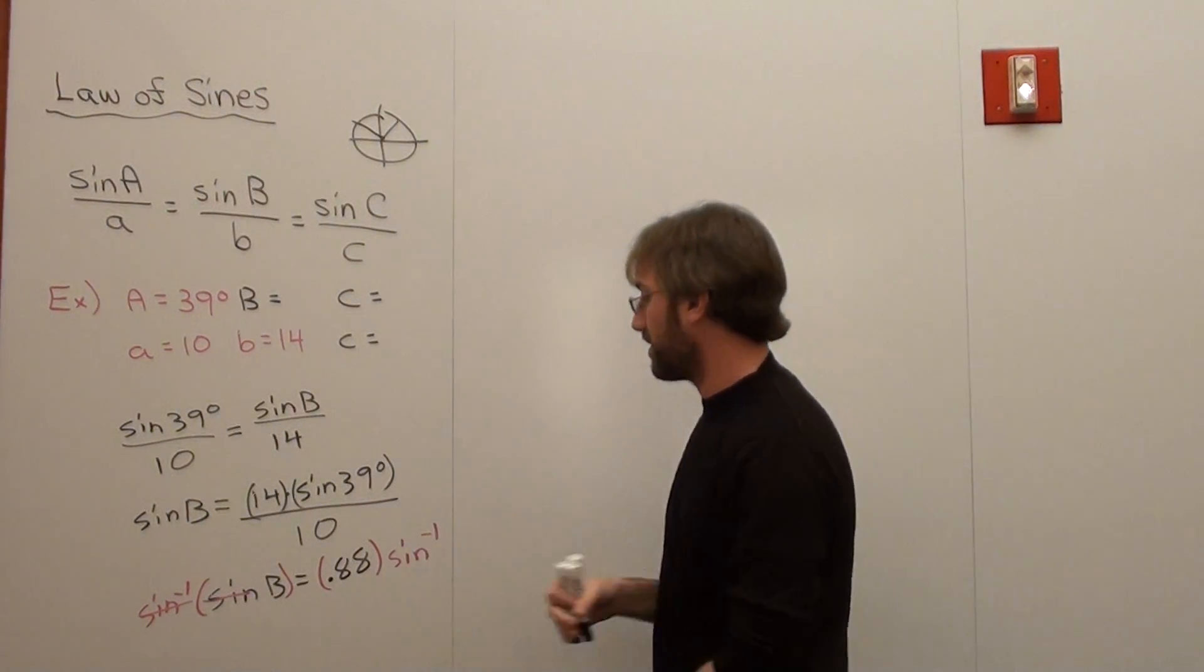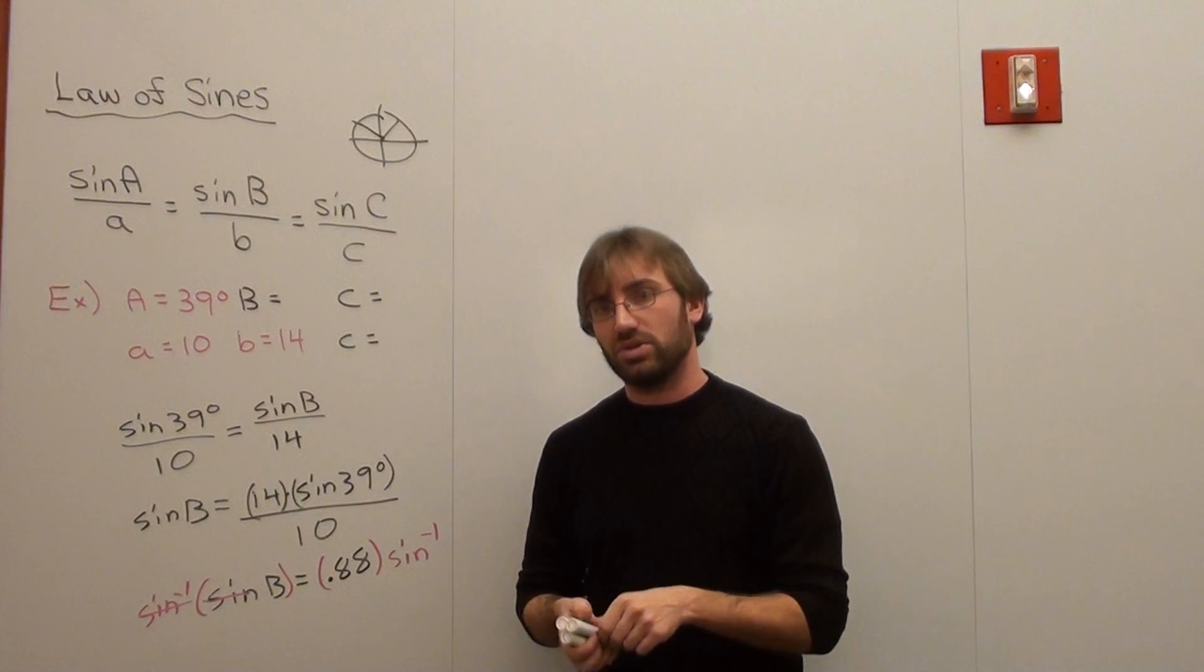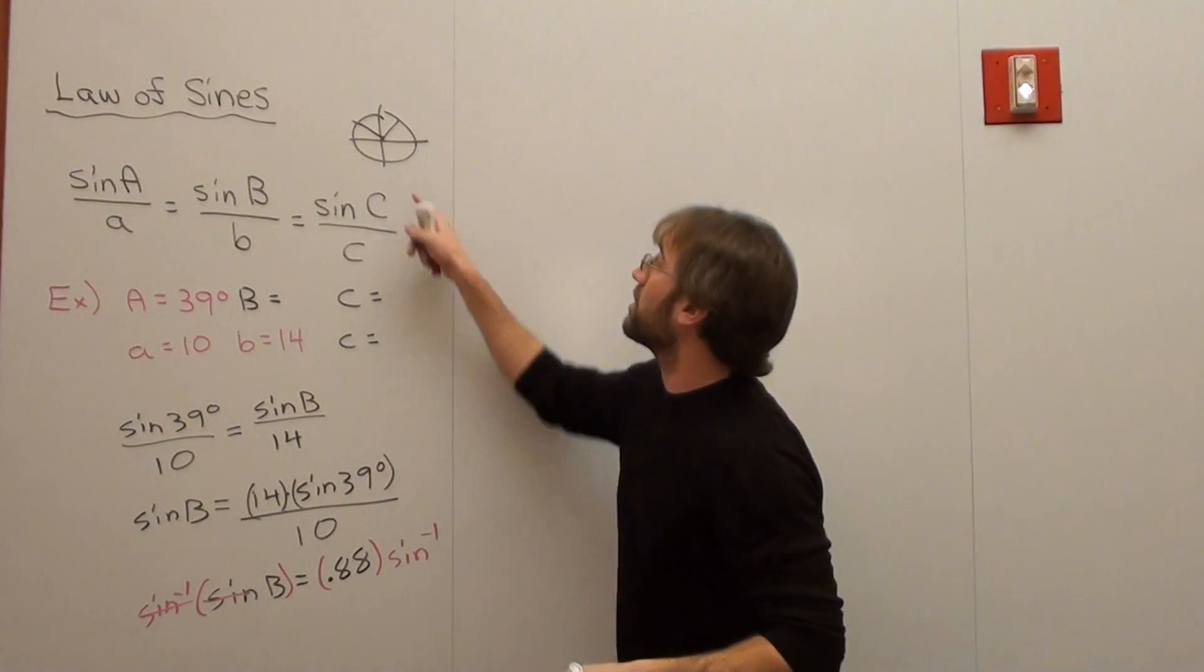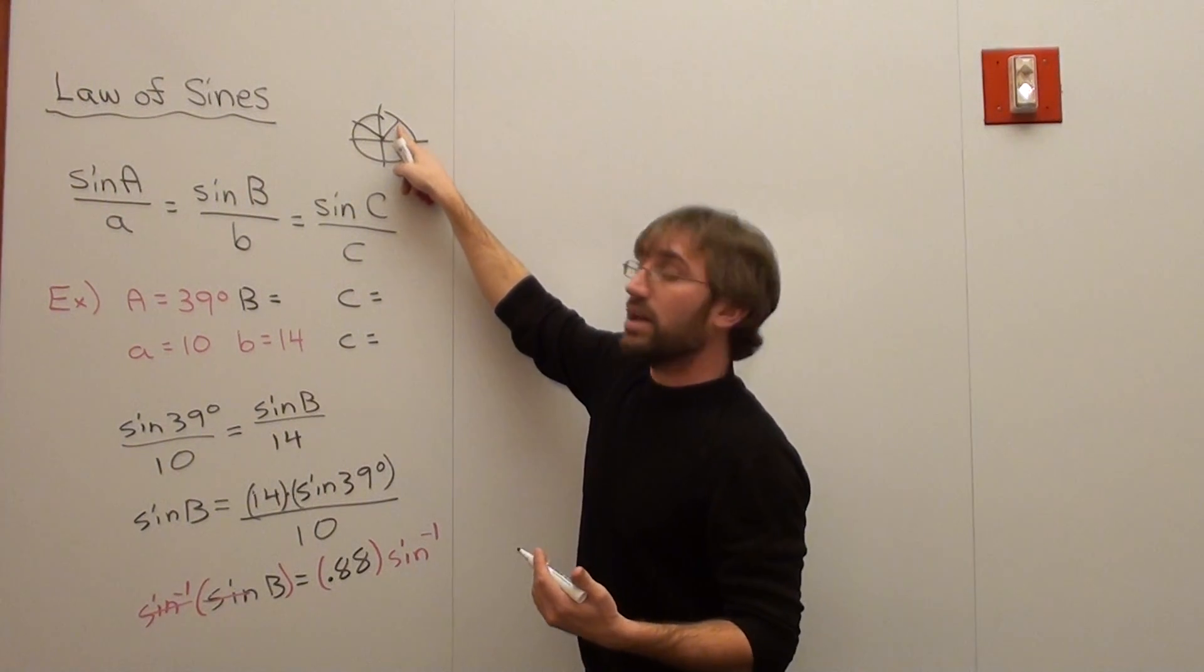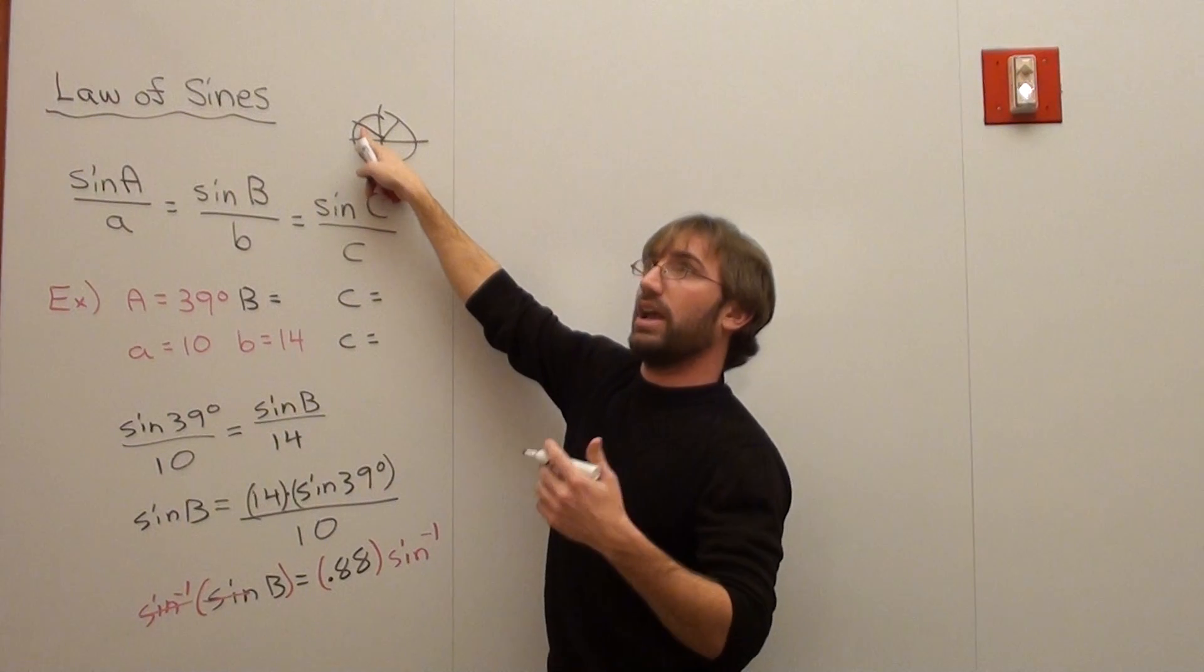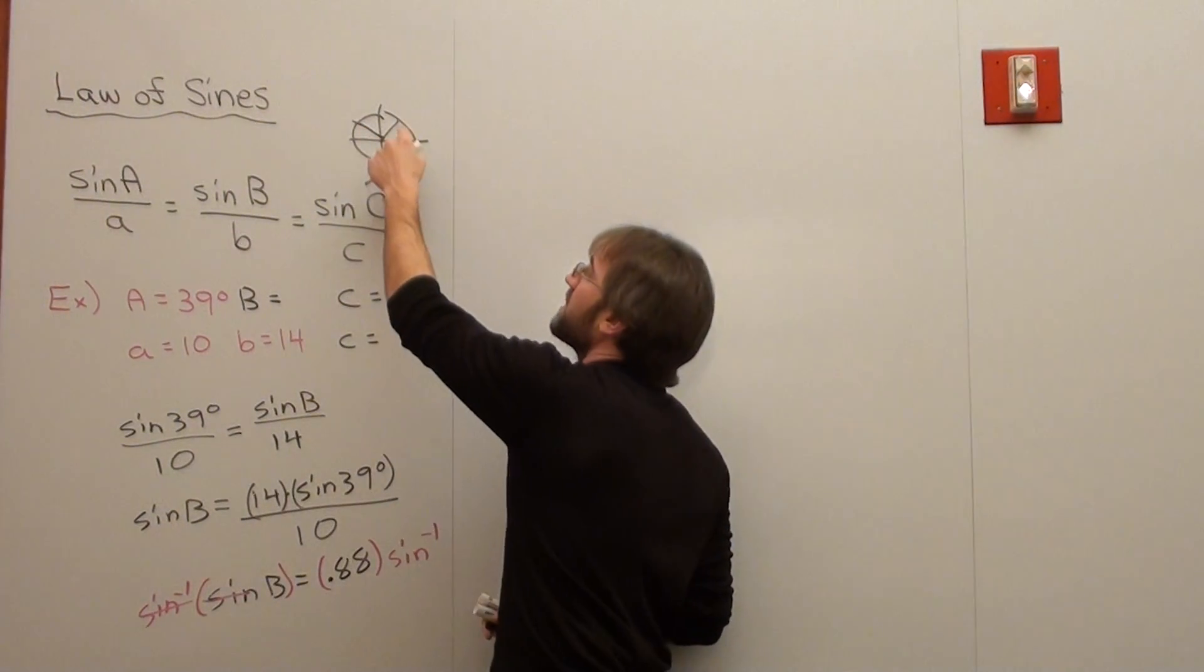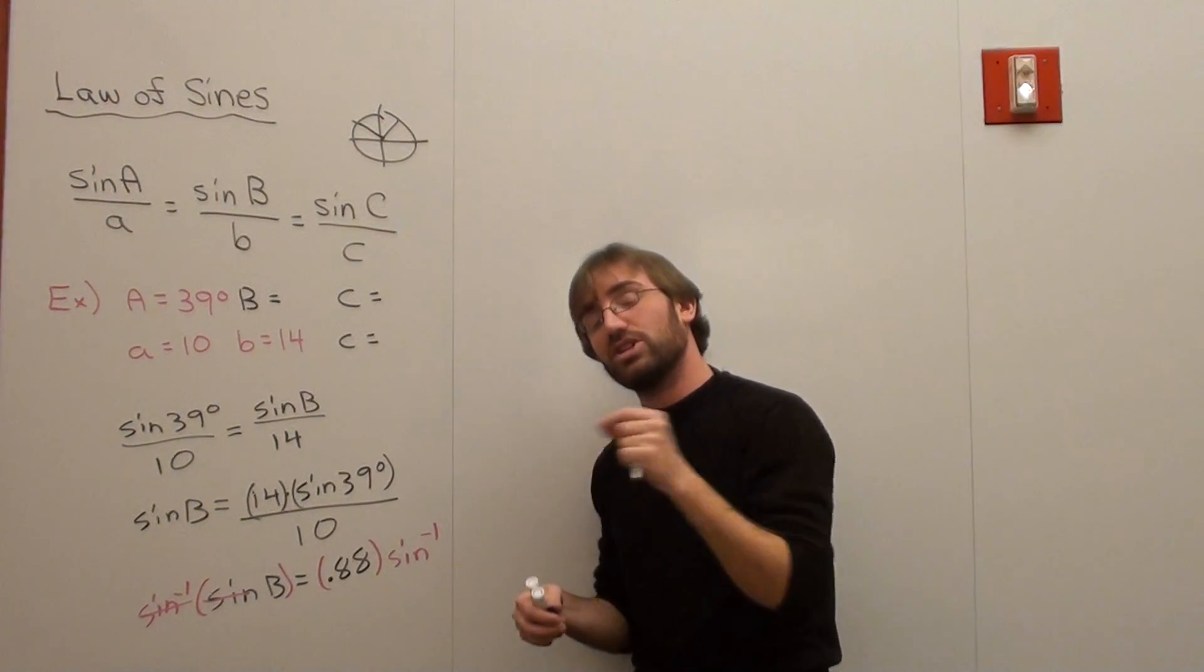But the inverse sine of 0.88 is not only 62 degrees. The simple reason why is because when I'm working on a unit circle, the Y value for 62 degrees is 0.88, but the Y value for 118 degrees is also 0.88, because sine is positive in both the first and second quadrant.